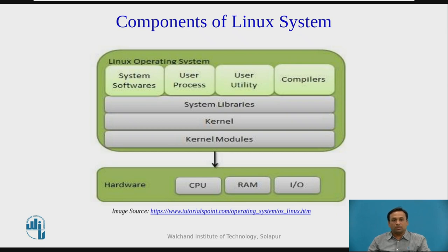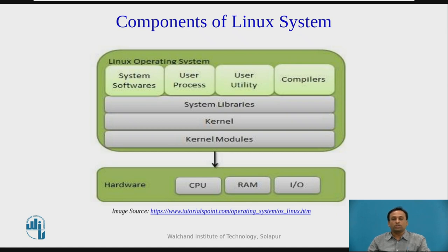An operating system is the software that enables communication between the computer hardware and the software. It conveys input to get processed by the processor and brings output to the hardware to display it. This is the basic function of an operating system.